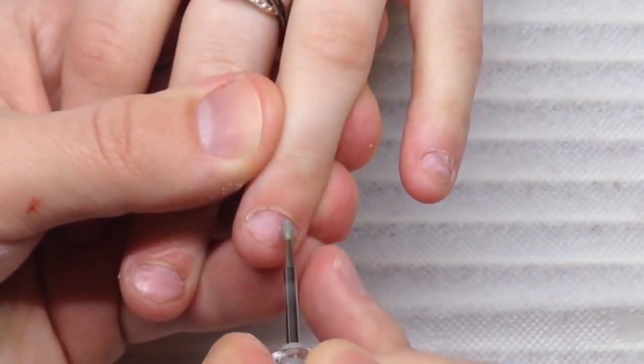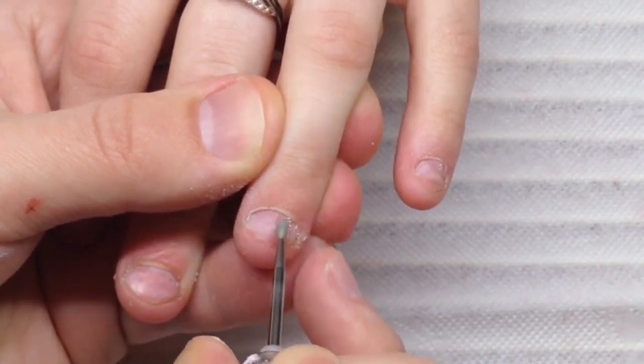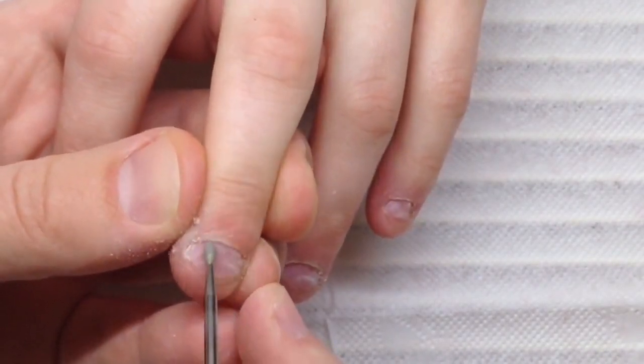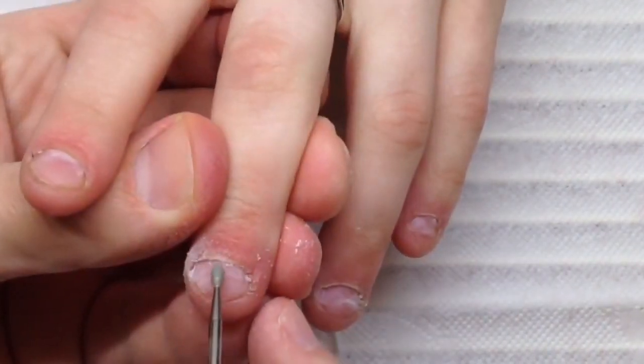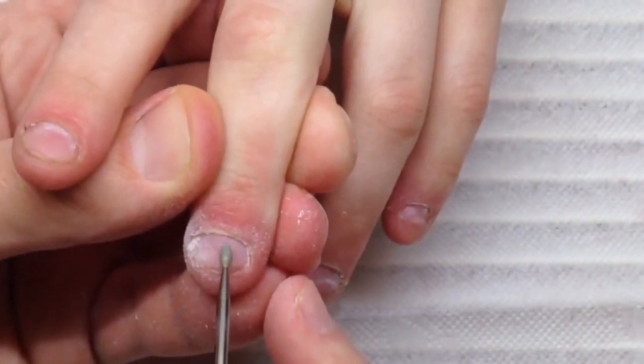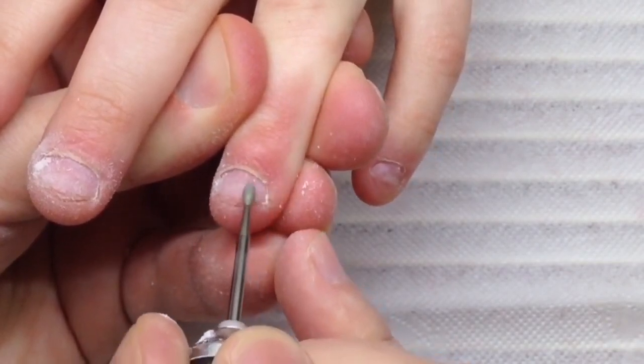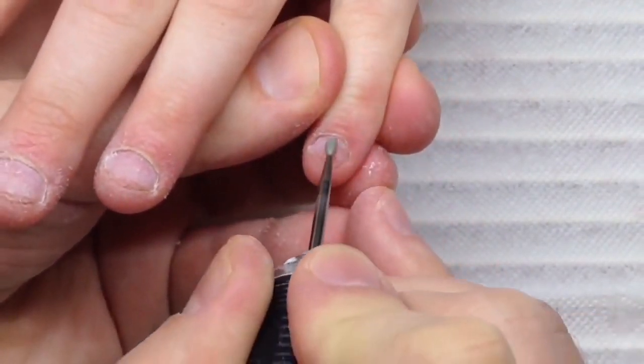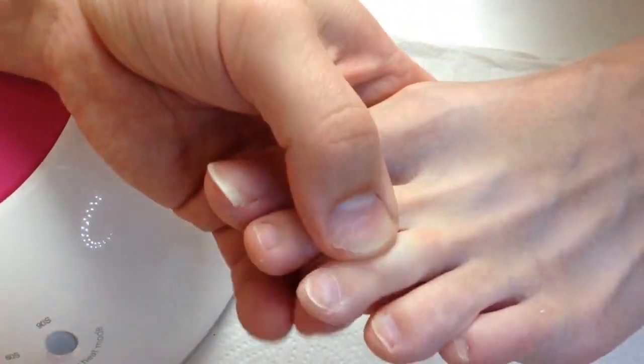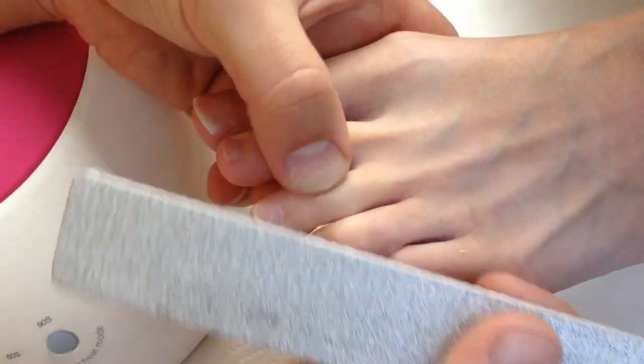Some technicians don't pay maximum attention on this process and this is the main mistake. That's why they have lifting. Some are telling that they do everything correctly but they don't see that they leave remaining pterygia. Only after a long period of training will the nail technician feel the level of removing this dead skin. If you still have problems with liftings, you should train your hand on more clients and never rush.